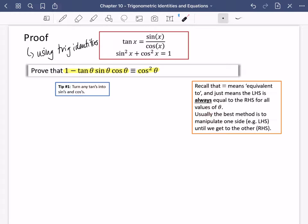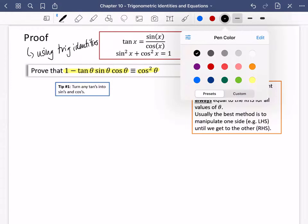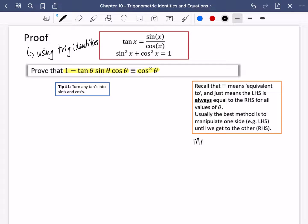Usually, not always, the best method is to manipulate one side, perhaps the left-hand side, into making it look like the right-hand side. And I would give a further tip on top of this: I would manipulate the messier side by tidying it up to look like the other side.